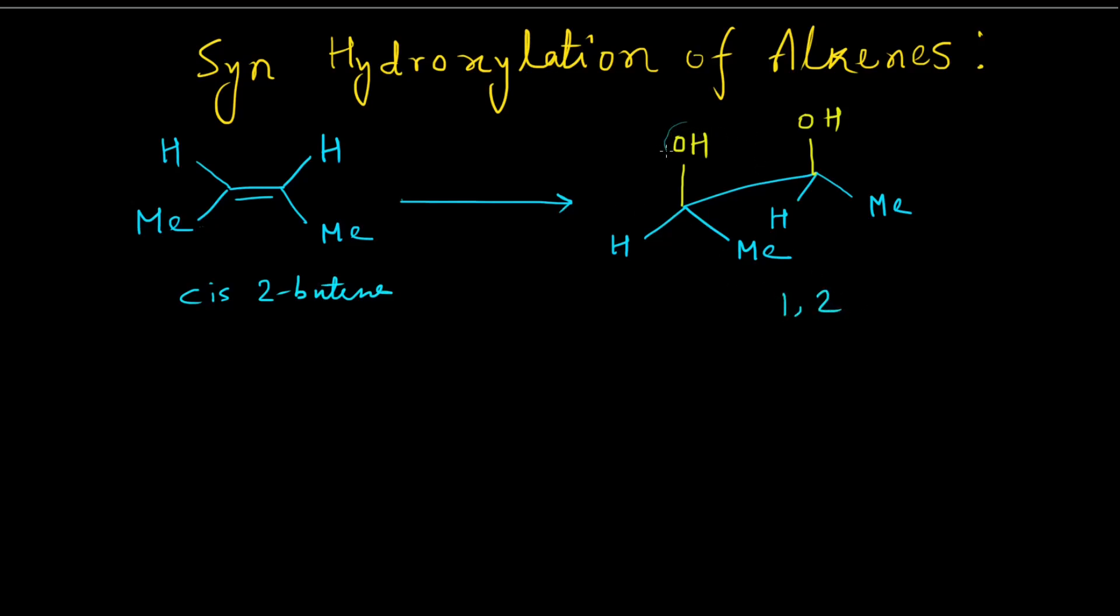Suppose we want to transform this cis-2-butene into its corresponding 1,2-diol which is syn in nature. That is, the two hydroxyl groups after the reaction will be in the syn relationship with each other.